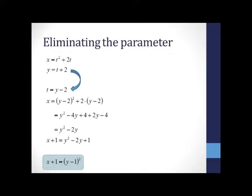In our last example, it would be easy to solve our second equation for t, giving us t equals y minus 2. Then substitute this for t in our first equation for x, yields x equals y minus 2 squared plus 2 times y minus 2. So we have an equation which now involves only x and y.